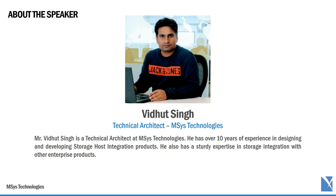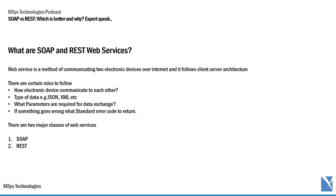Can you tell us what are SOAP and REST web services? Web services is a method of communicating to electronic devices over the internet. It follows client-server architecture, where one would be the service provider and the other would be the consumer. There are certain rules to follow — how devices communicate, what type of data they exchange (whether JSON, XML, or any other MIME type), what parameters are required, and what standard error codes to return. There are two major classes of web services: SOAP and REST.